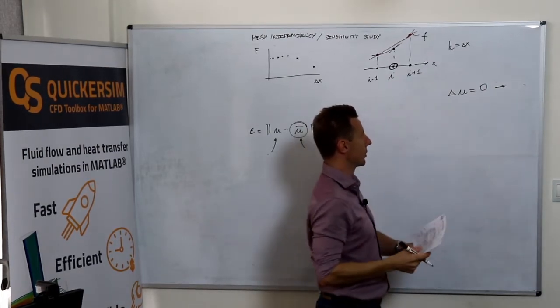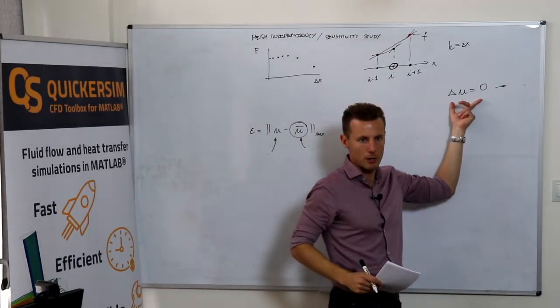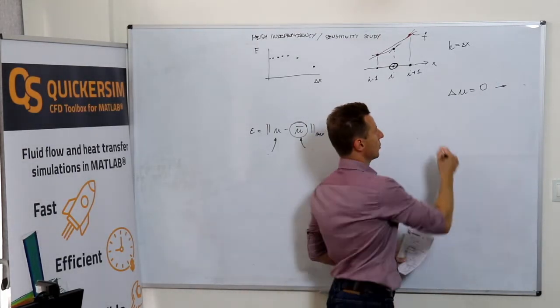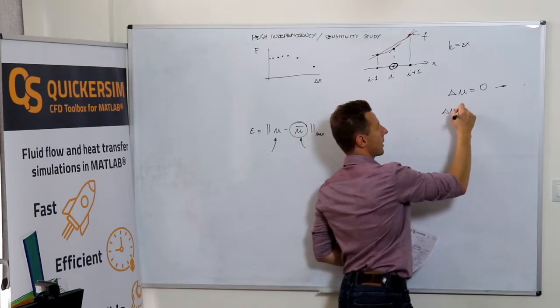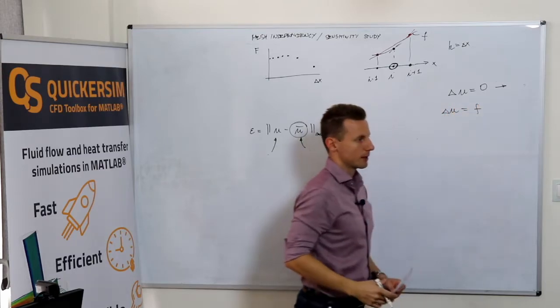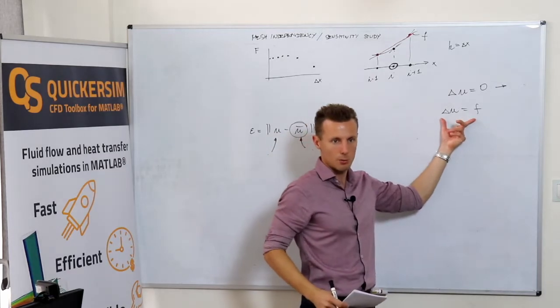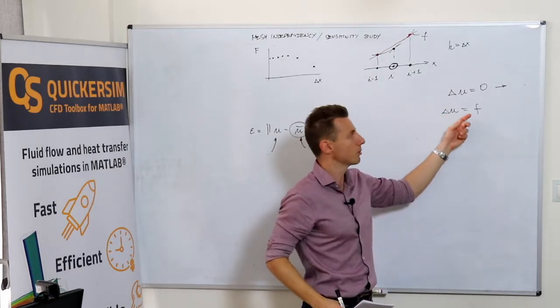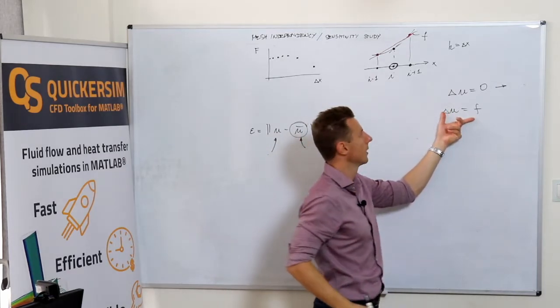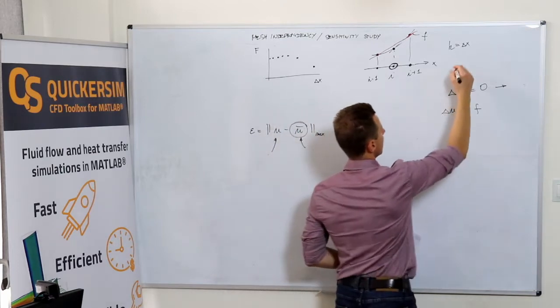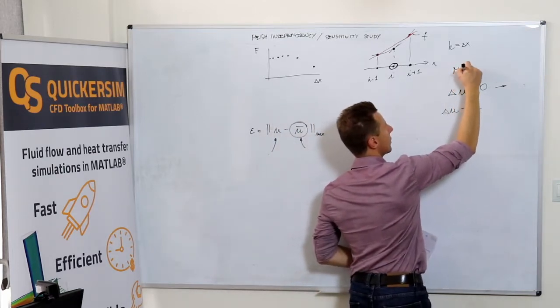So what you should do, if you want to exploit the manufactured solution concept, is first, even if you want to solve the Laplace equation, you need to move to Laplace equation with the right-hand side, with sources, so basically you need to change to the Poisson equation.